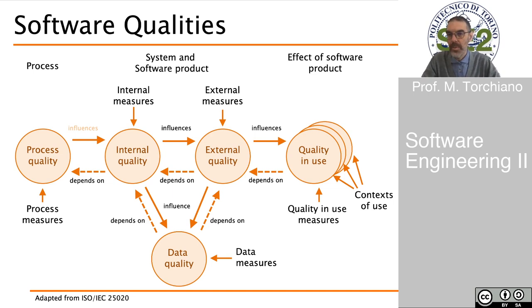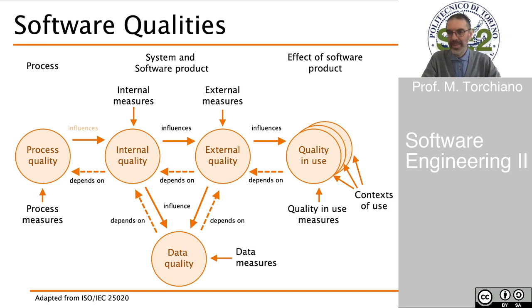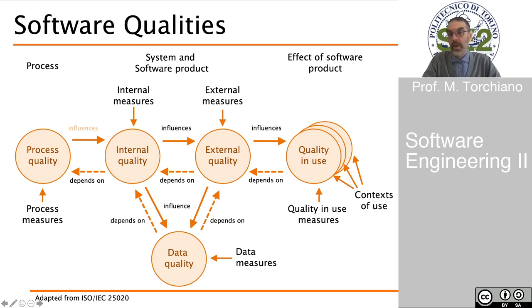The overall model that puts together all the different aspects of quality shows process quality as the first initial aspect — outside the scope of this part — where the quality of the process influences the internal quality of our software system. The internal quality in turn influences the external quality, which on its turn influences the quality in use. The quality of the data depends on the internal quality and the external quality.